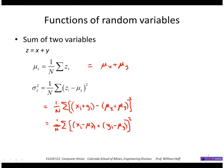And multiplying those out, I would get xi minus mu x squared plus yi minus mu y squared plus two times xi minus mu x times yi minus mu y.